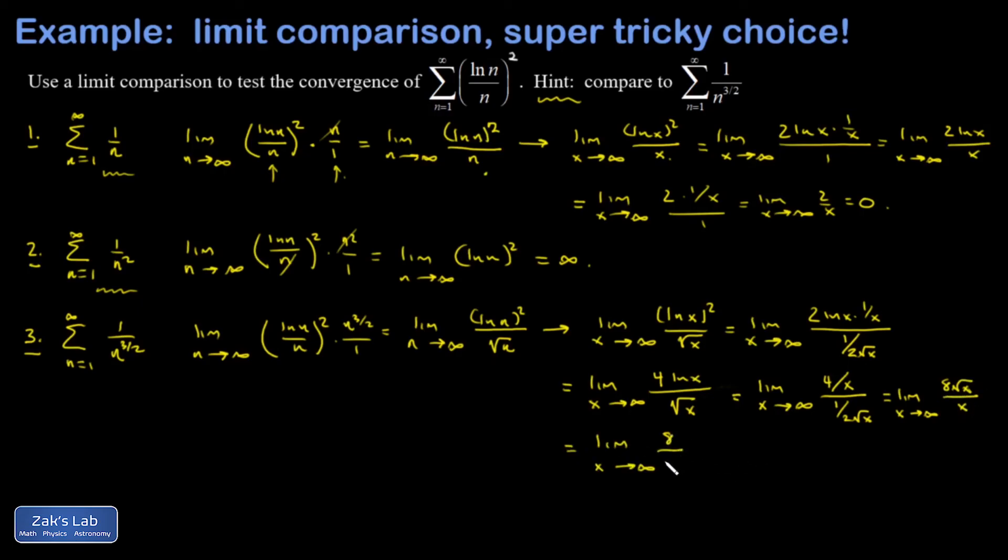All right, cancel that root x out of the numerator. And I end up with eight over the square root of x as x goes to infinity, which is finally an unambiguous thing. And that gives me zero.